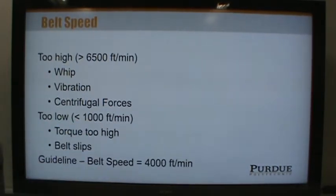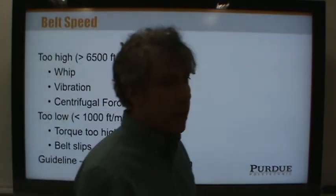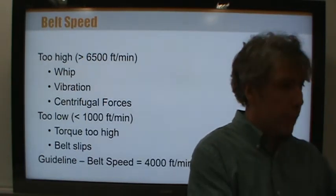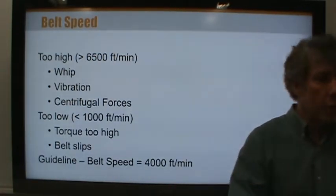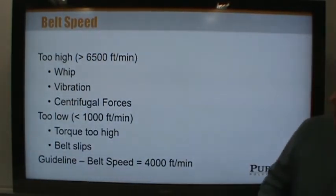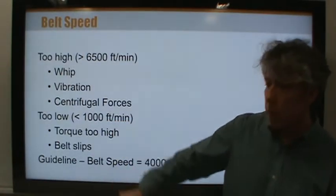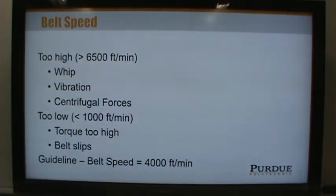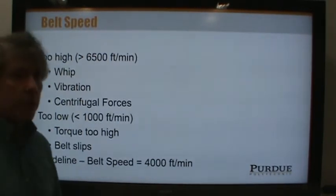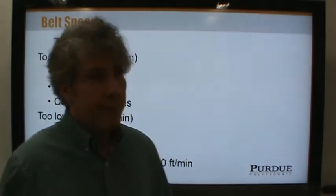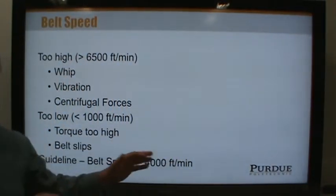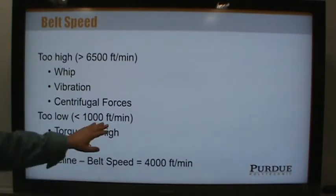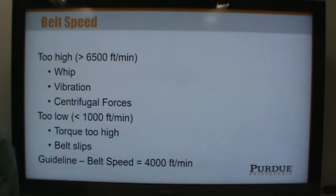If you run belt speed too low, given a fixed power requirement, you must trade off between torque and speed. At too low a speed, the torque requirement becomes too high and the belt will simply slip. You really want belts to run at about 4,000 feet per minute as a good starting point. If you designed something and came up with 5,000 feet per minute, that's okay — this is a rule of thumb, not an exact answer. Too low and it slips; too high and it either slips or vibrates out of control.